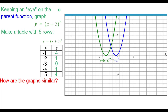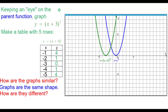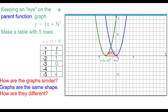How are the graphs similar? Well, they are the same shape. And how are they different? Notice from blue to green, every point shifted left three units.